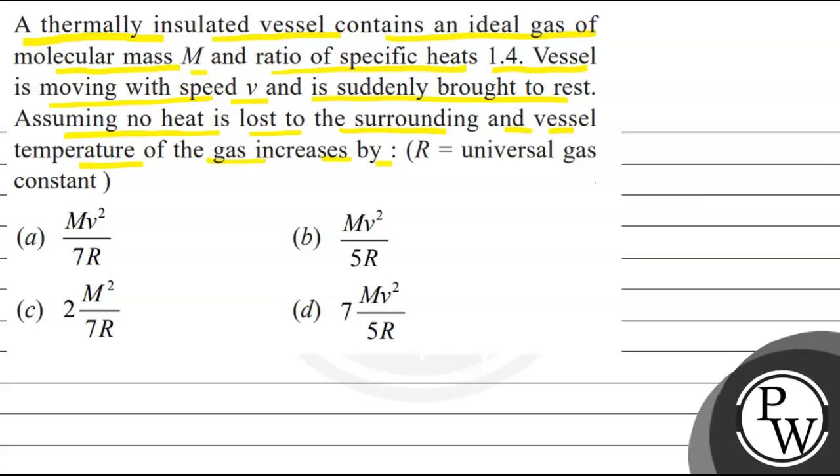Options are: MV square upon 7R, MV square upon 5R, 2M square upon 7R, 7MV square upon 5R. We have to choose the correct option.